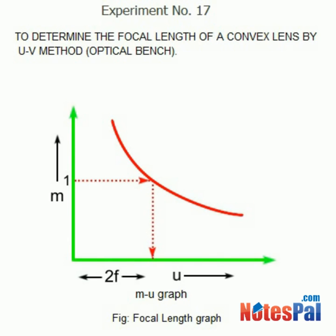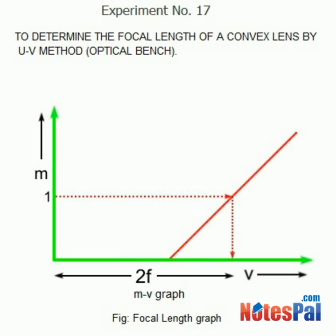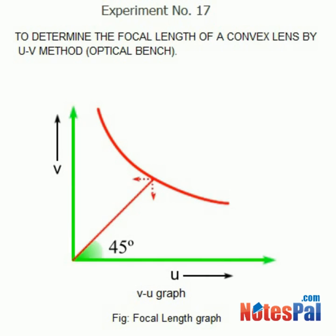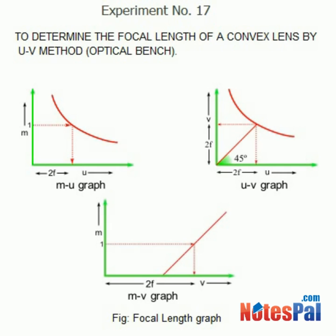Magnification is the ratio of the image distance to the object distance. When the magnification is unity, the image distance and object distance are equal. Moreover, both distances equal twice the focal length of the lens. From the graphs of u versus v, m versus u, and m versus v, the focal length can be found by taking the magnification as unity.